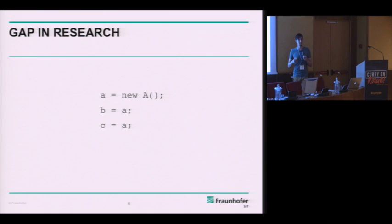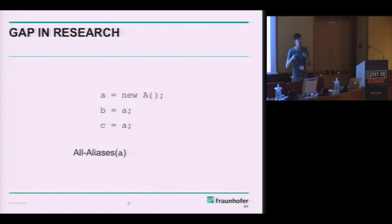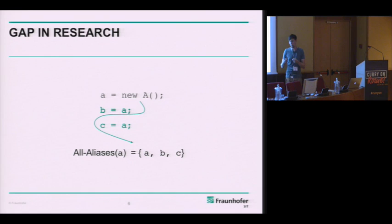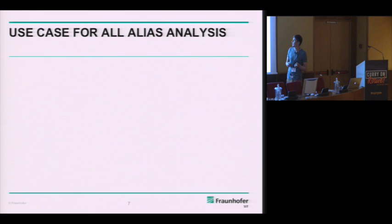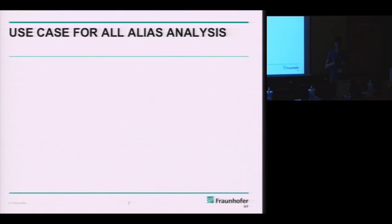We discovered there is actually one gap in research: you can't easily compute all aliases to a given variable with existing points-to analyses. In that program code, we would like to know that all aliases to A are A, B, and C — and we would like to have that in a demand-driven manner. This information is really necessary and helpful in clients like a taint analysis or a type state analysis.